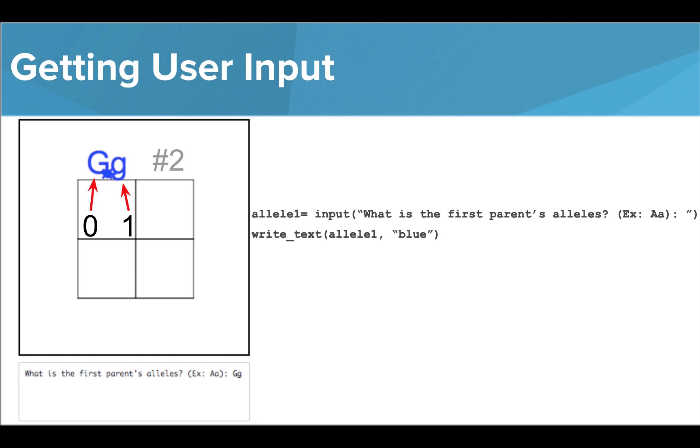In this case, the capital G is stored at index value zero, and the lowercase g is stored at index value one. So if I want to only print the capital G at location one, I can alter my write text command to only print the letter found at index zero, which is the capital G.